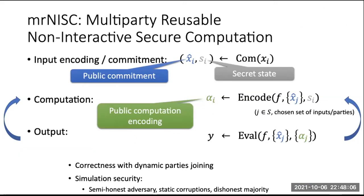More formally, an MR-NISC protocol consists of three phases, two of which output a message and the last is a computation phase. In the first phase, each party commits on its input — the commitment outputs a public commitment written to the public bulletin board, and also a secret state used in the later computation phase. In the computation phase, a subset of parties is given a function f they want to compute on their joint inputs. Each party's computation phase takes as input the function, the commitments on all other parties' inputs, and its own secret state, and outputs a public computation message. A public evaluation function then generates the output of the desired function using only the public commitments and computation messages.